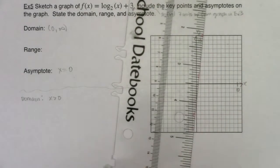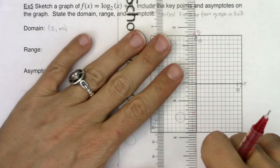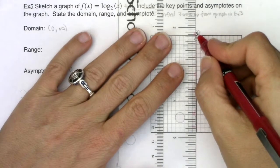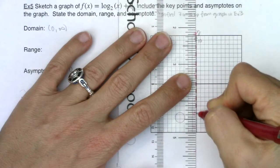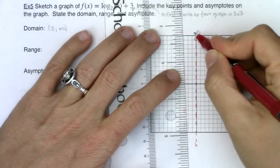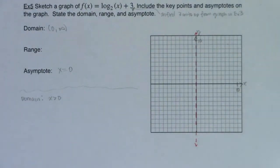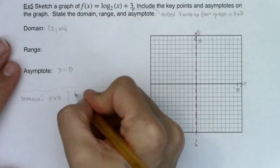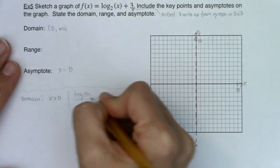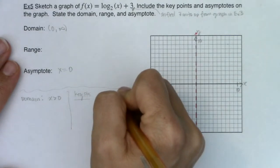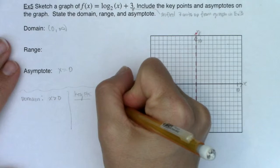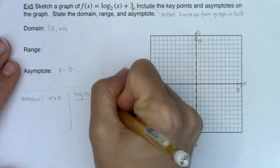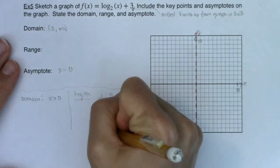There is my vertical asymptote. Now with that, I would like some key points and I want to be efficient with what x values I pick. I have log base 2, so I'm going to pick powers of 2—I'm going to put 1 in there, 2, 4, and 8 because those are powers of 2.